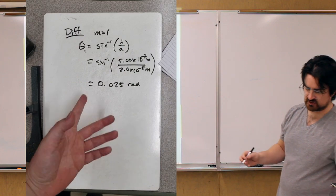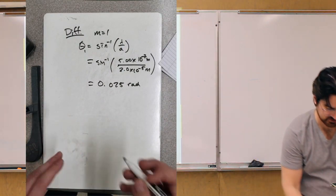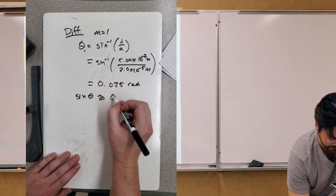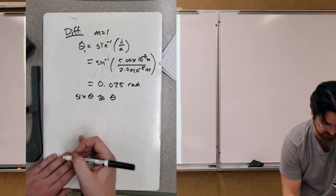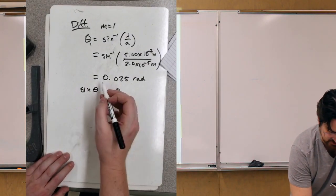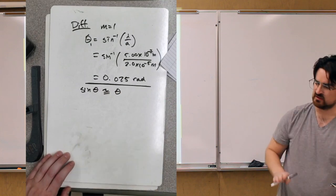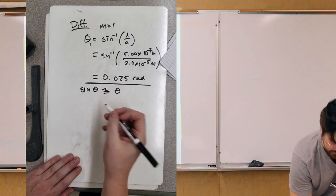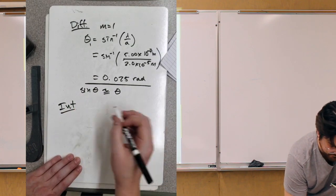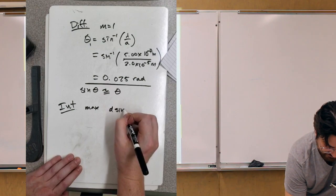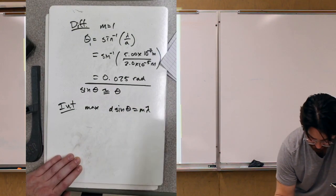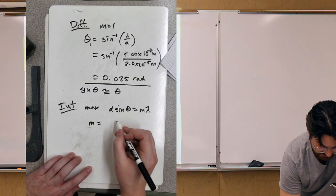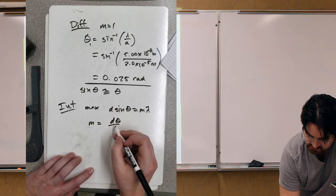With 500 nanometers = 5 times 10 to the minus 7 meters, and slit width 0.02 millimeters = 2 times 10 to the minus 5 meters, that gives 0.025 radians. This is a very small angle, so sine of theta is essentially equal to theta — we'll just use theta going forward. This is the angle from the center to the first minimum. Now we're thinking about interference: for constructive interference in the double slit setup, solving for the fringe order m and using the small angle approximation.